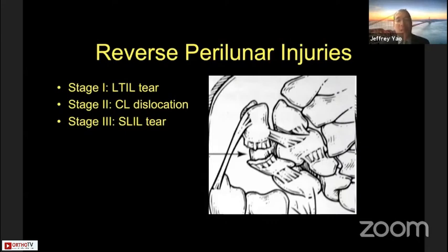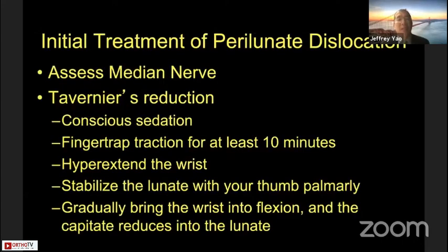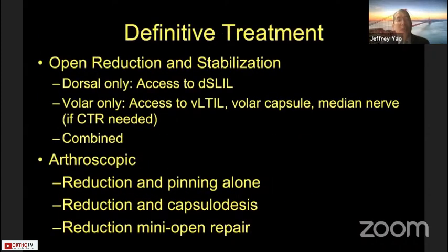Initial treatment requires assessing the median nerve, which is often contused with a neuropraxia. Reduction maneuvers require adequate conscious sedation and traction to fatigue the muscles. We hyperextend the wrist, stabilize the lunate with the thumb, then push and gradually bring the wrist into flexion so the capitate reduces back into the lunate. Definitive treatment would then be either arthroscopic management or open reduction and stabilization.